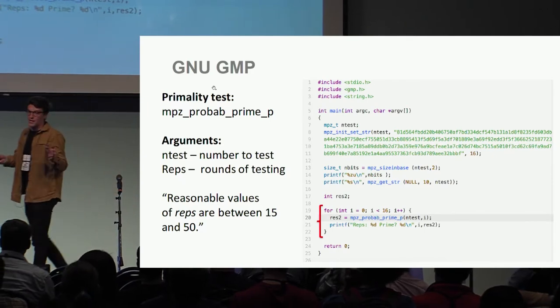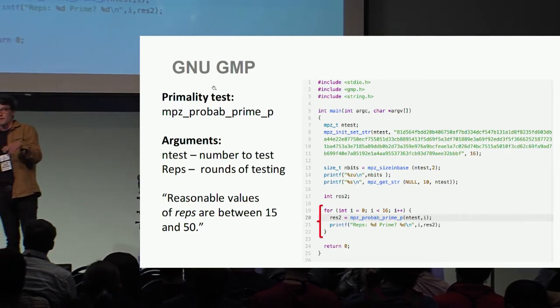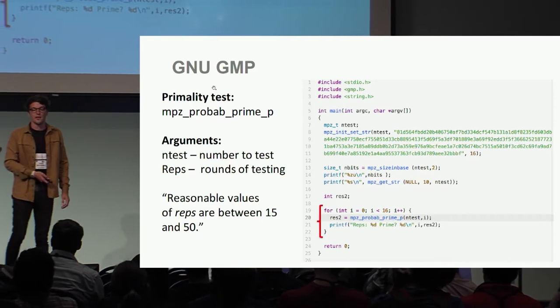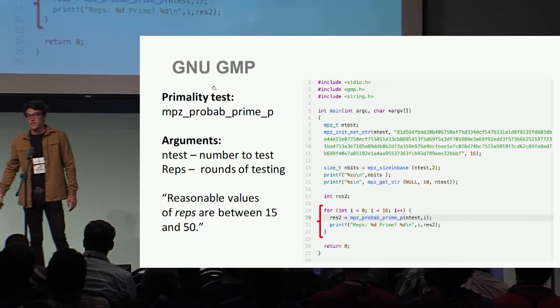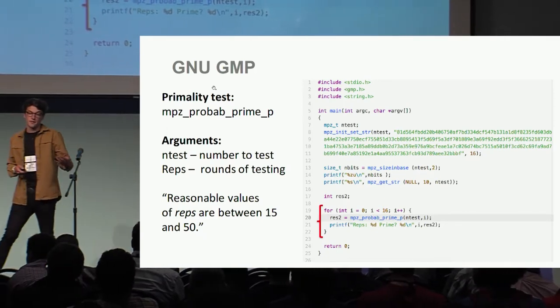We can think about this reps value as essentially how many Miller-Rabin iterations are going to be performed. In the documentation, we're told that reasonable values of reps are between 15 and 50.